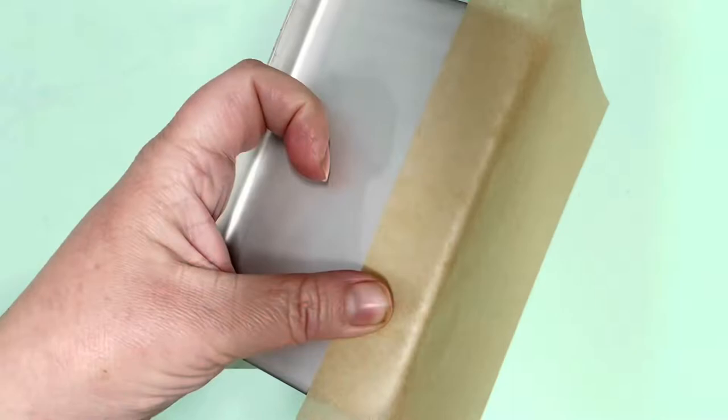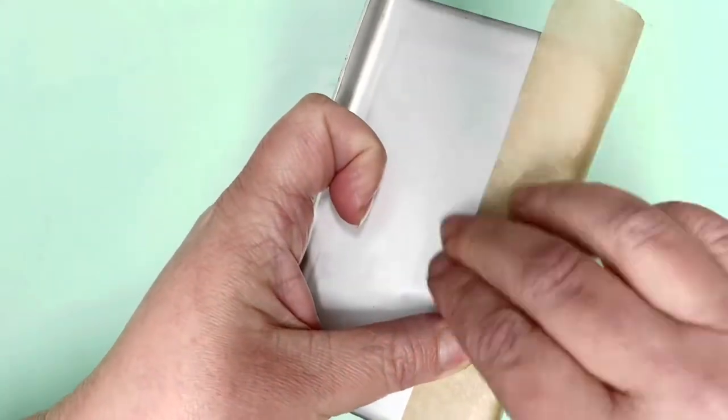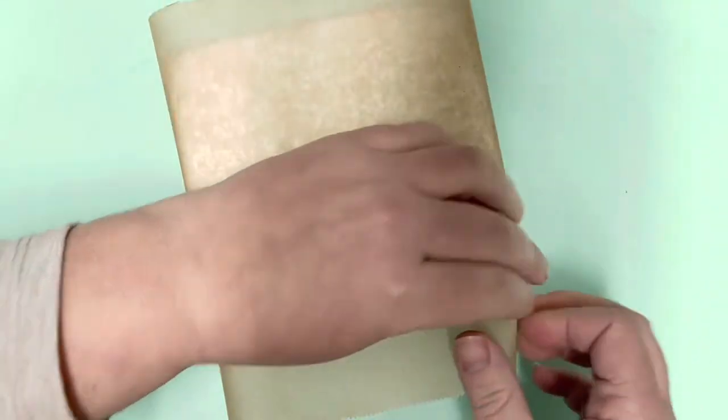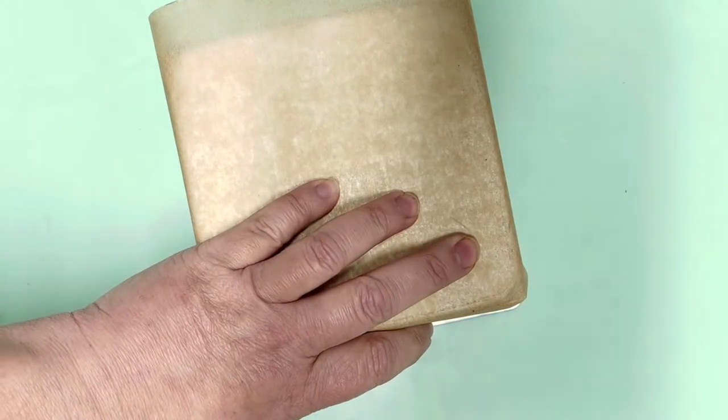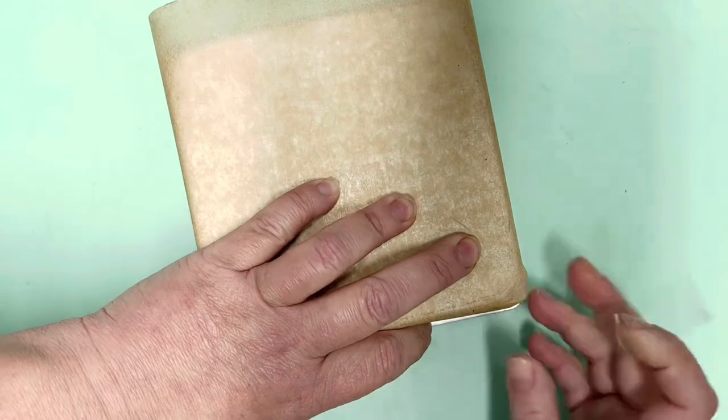I'm working on a five-inch tin here because my cake was four inches square. I always use a tin one inch bigger than the actual cake that I'm making.